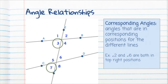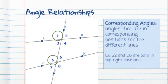Angles three and seven are also corresponding — they're both in the bottom left position. Angles one and five are both in the top left, so they're also corresponding angles. And then four and eight are corresponding angles.